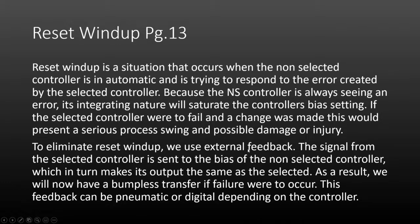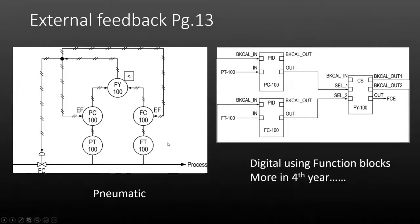The external feedback can be either pneumatic or digital depending on the controller. Here's what it looks like pneumatically — it is very simple. I have this controller, another controller, and a low selector taking a process measurement. The pressure controller is the low one right now — it sends its signal to the selector, the selector selects that signal and sends it out to the valve.